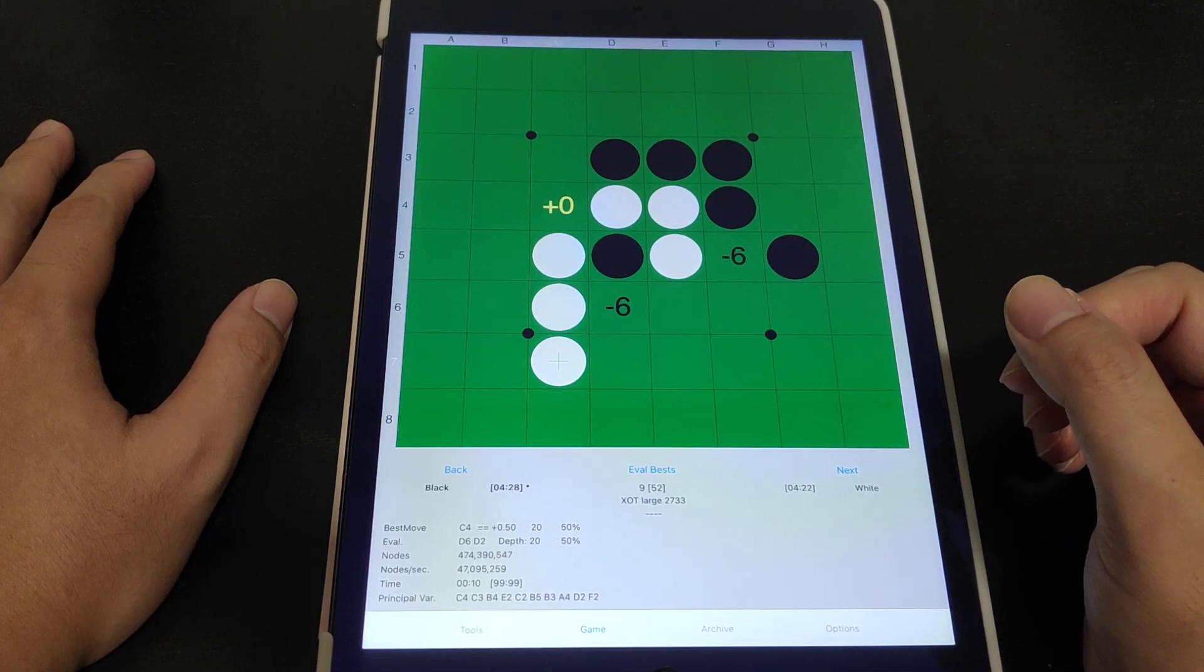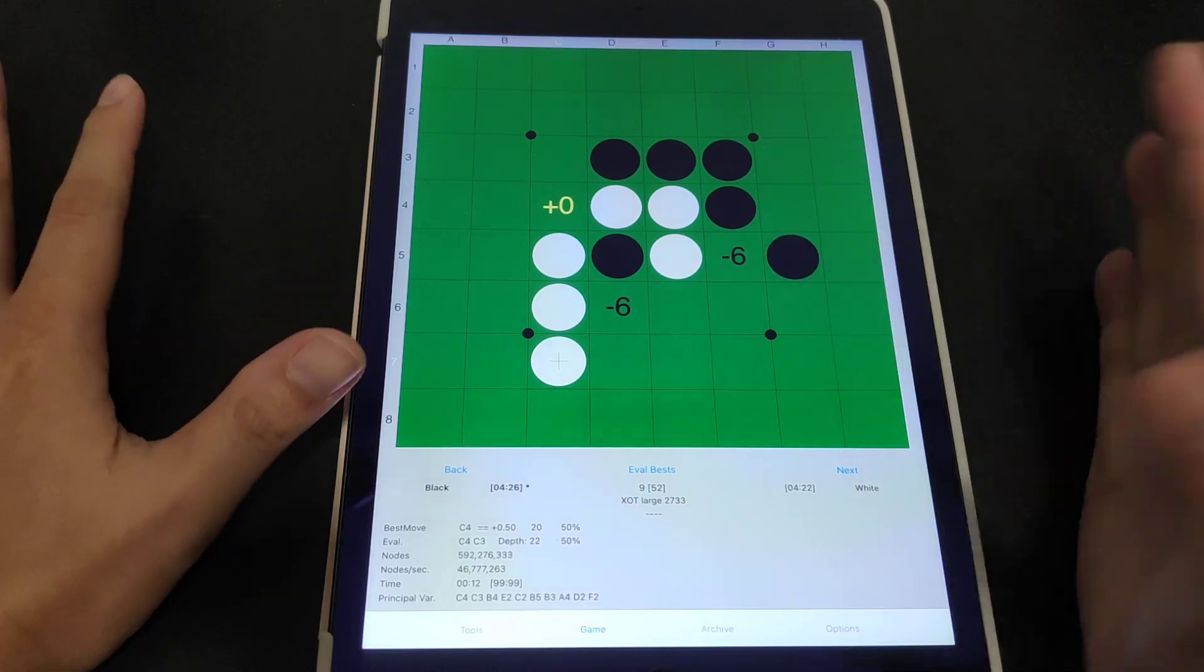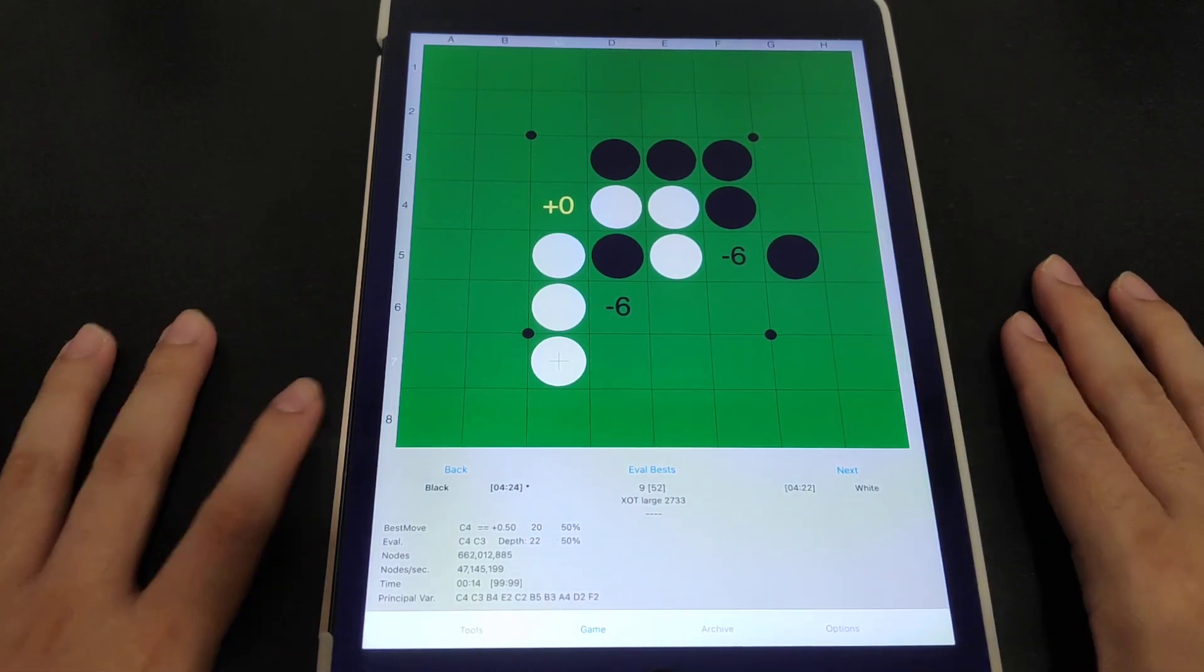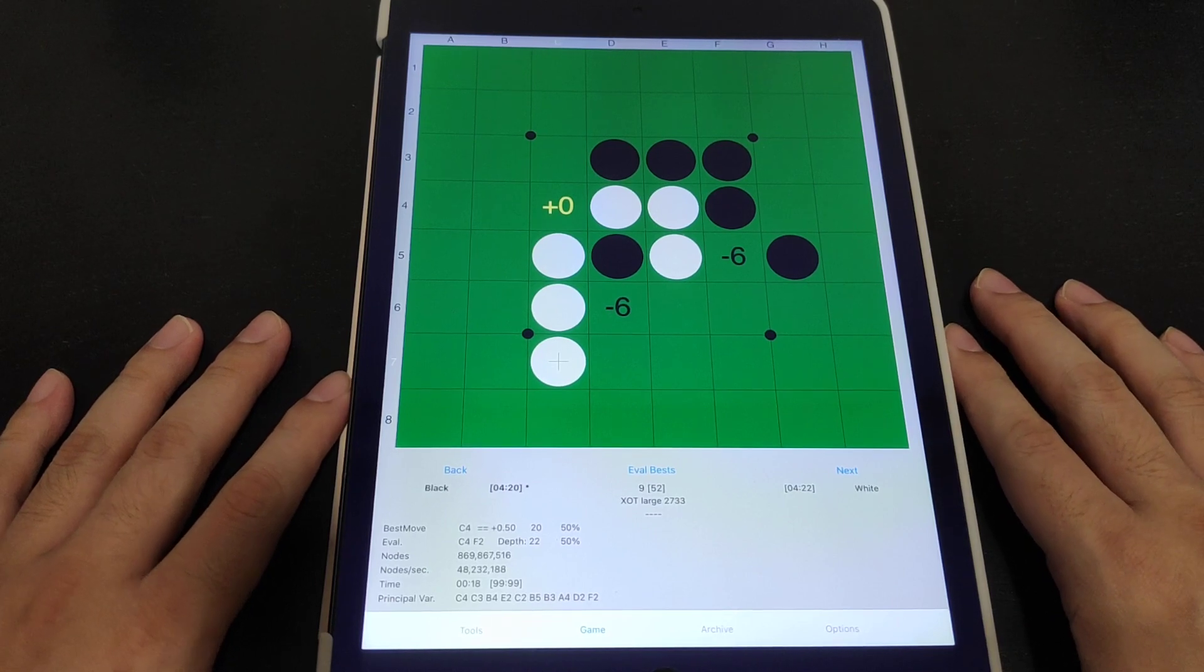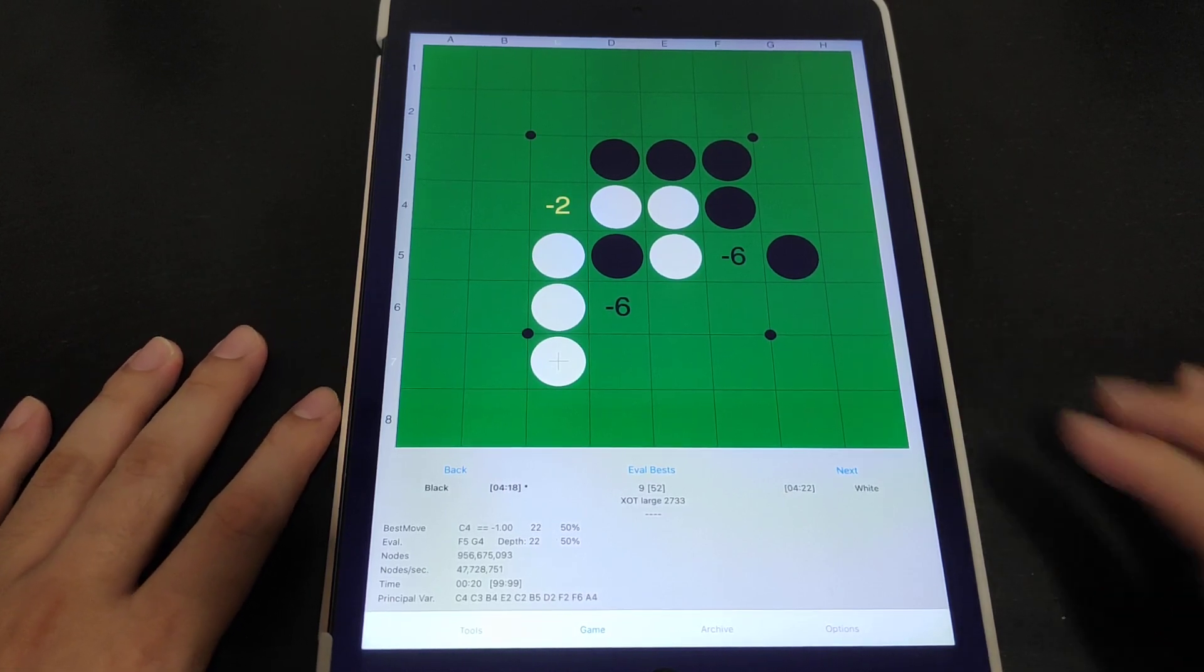XOT is basically a random opening for the first eight moves on both players side. So yeah basically try it. I think that's all the modes that I wanted to cover for today.